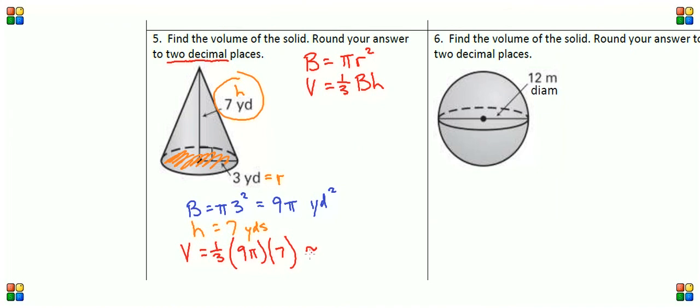That's approximately because we're rounding. So 65.97, and this is a volume measurement. That means it's three-dimensional, and that means our units of measure are going to be in three dimensions or cubed. So final answer is 65.97 yards cubed.